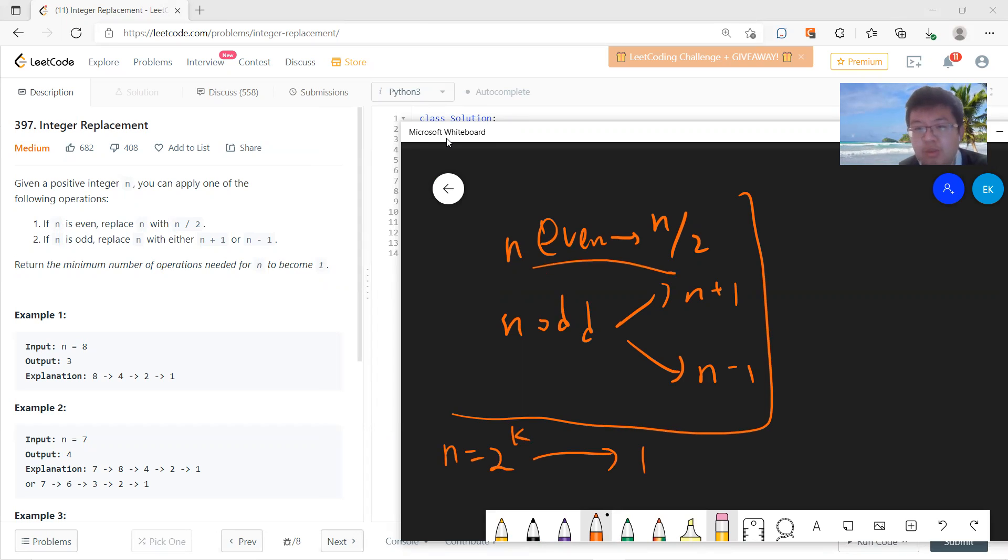You can only divide by 2 because by definition n is even. So in this one, you don't have any choice. You can only divide by 2. So there's no way that you can do other things.